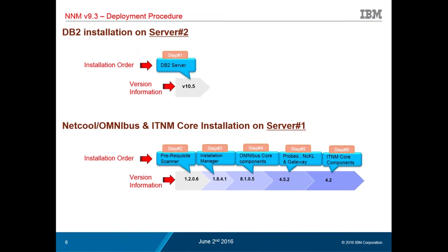The installation order totals 20 steps. First, DB2 installation on Server 2 alongside DASH. Then you go back to Server 1 to lay down Omnibus core, ITNM core, probes, and the NICL package so core deployment is ready before deploying GUI pieces. You may find later versions of some packages — for example, prerequisite scanner 1207 is available on Fix Central, and Installation Manager 1.8.4.1 is the latest. Any version at or above the listed versions should work for NNM 9.3.